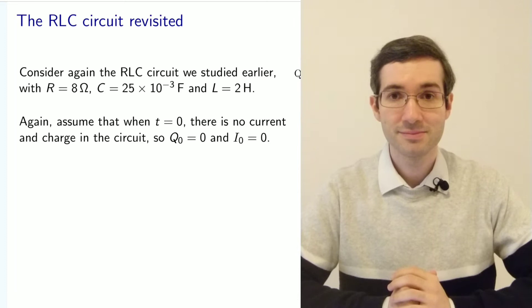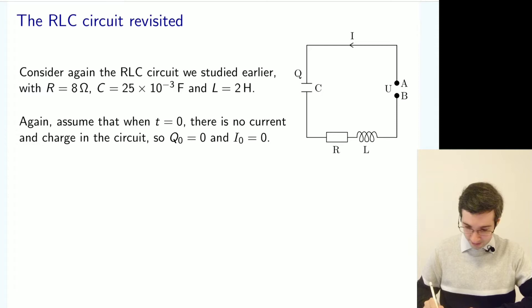Let's look at the circuit. We have a resistance, inductance, capacitance, and some voltage applied across the circuit to generate an electric current.